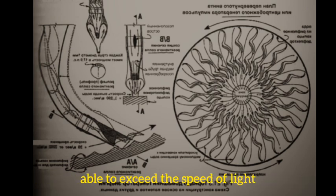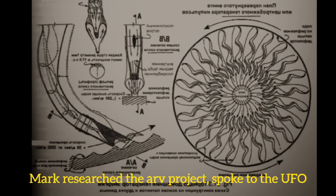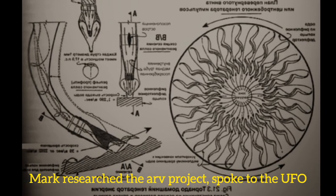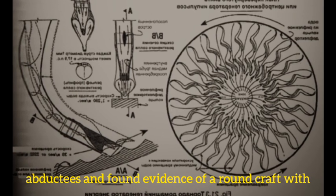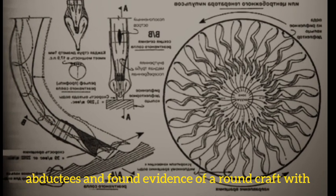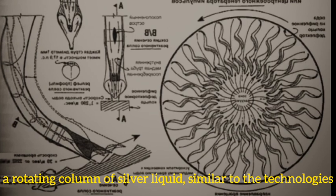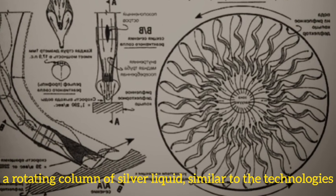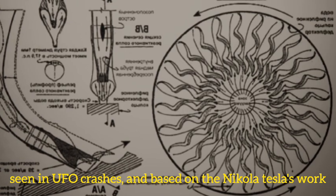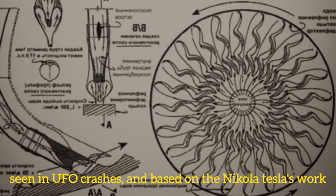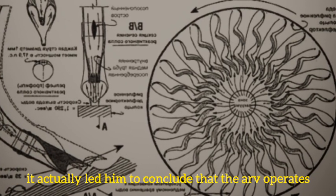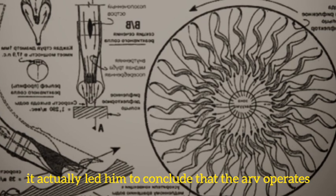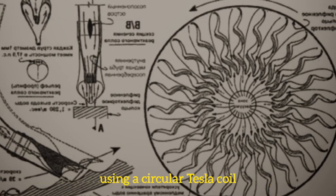The ARV can exceed the speed of light. Mark researched the ARV project, spoke to UFO abductees, and found evidence of a round craft with a rotating column of silver liquid, similar to technology seen in UFO crashes. Based on Nikola Tesla's work, he concluded the ARV operates using a circular Tesla coil.